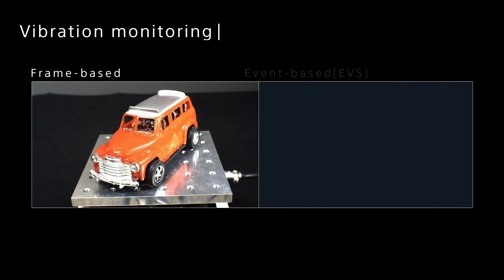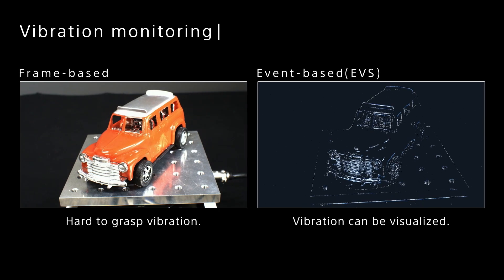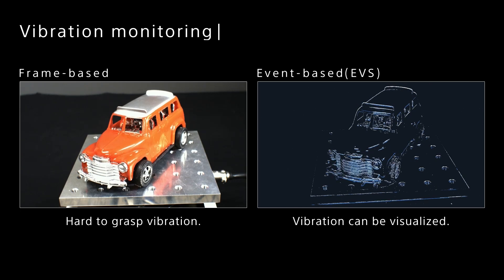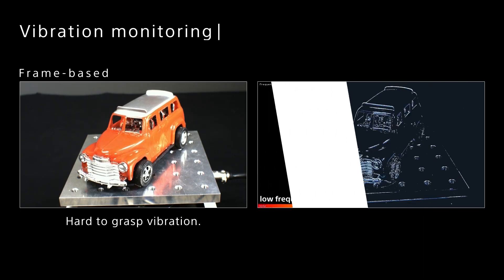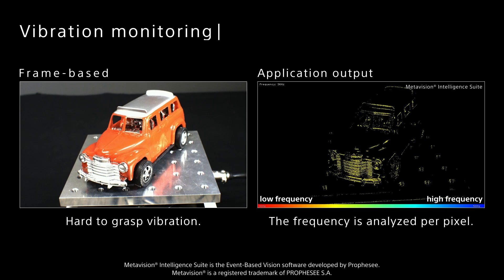Vibration monitoring. With EVS, only the vibrating parts are processed and output so that the vibration is more clearly visualized. It is possible to take a frequency value for each pixel out of vibration.